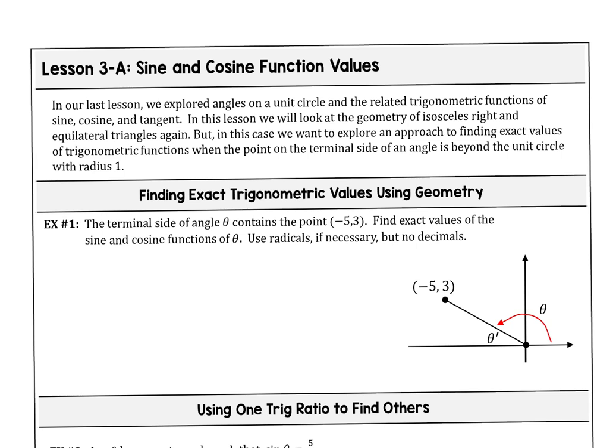We're continuing on in lesson three of unit three. We've been dealing with trig functions and periodic functions, and last section we got heavy into sine, cosine, and tangent. We finished up with the unit circle, so I want to remind you that you need to memorize that — keep trying to recreate it so it becomes a habit. The unit circle has a radius of one always.